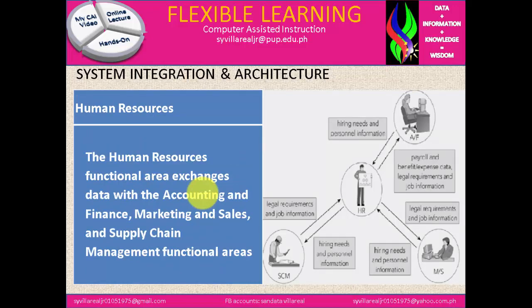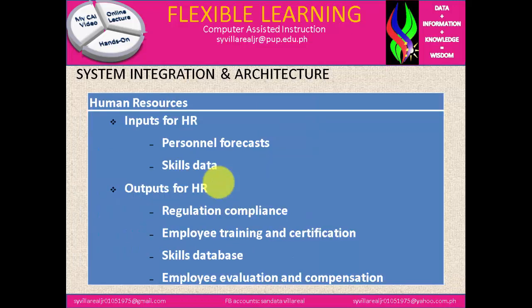We have here the figure of HR, which is considered to be directly connected to AF, MS, and SCM. The human resources functional area exchanges data with accounting and finance, marketing and sales, and supply chain management. HR inputs include personnel forecast and skills data. HR outputs include regulation compliance, employee training and certification, skills database, employee evaluation, and compensation.